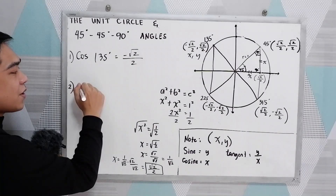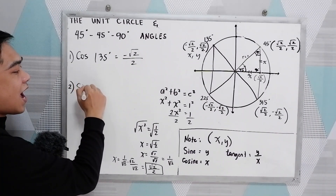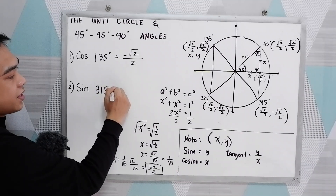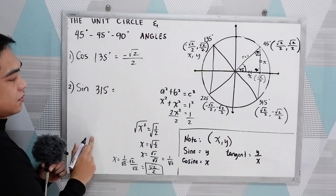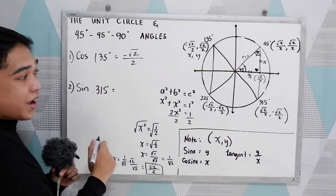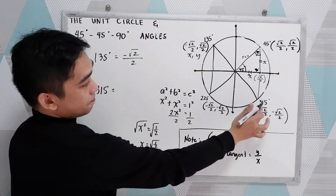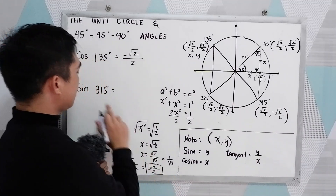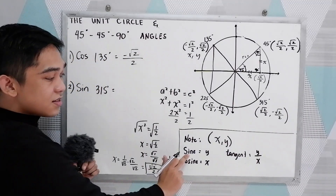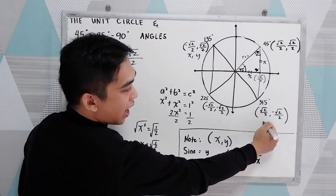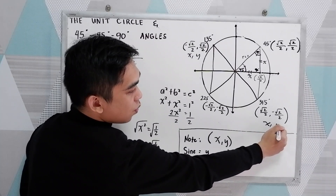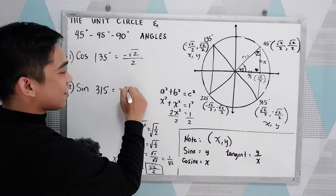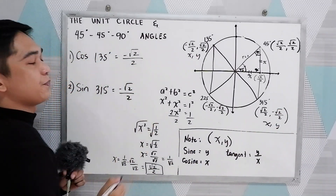Second, let's say we have sine 315 degrees. Locate 315. Sine is our y value. So we have negative square root of 2 over 2.